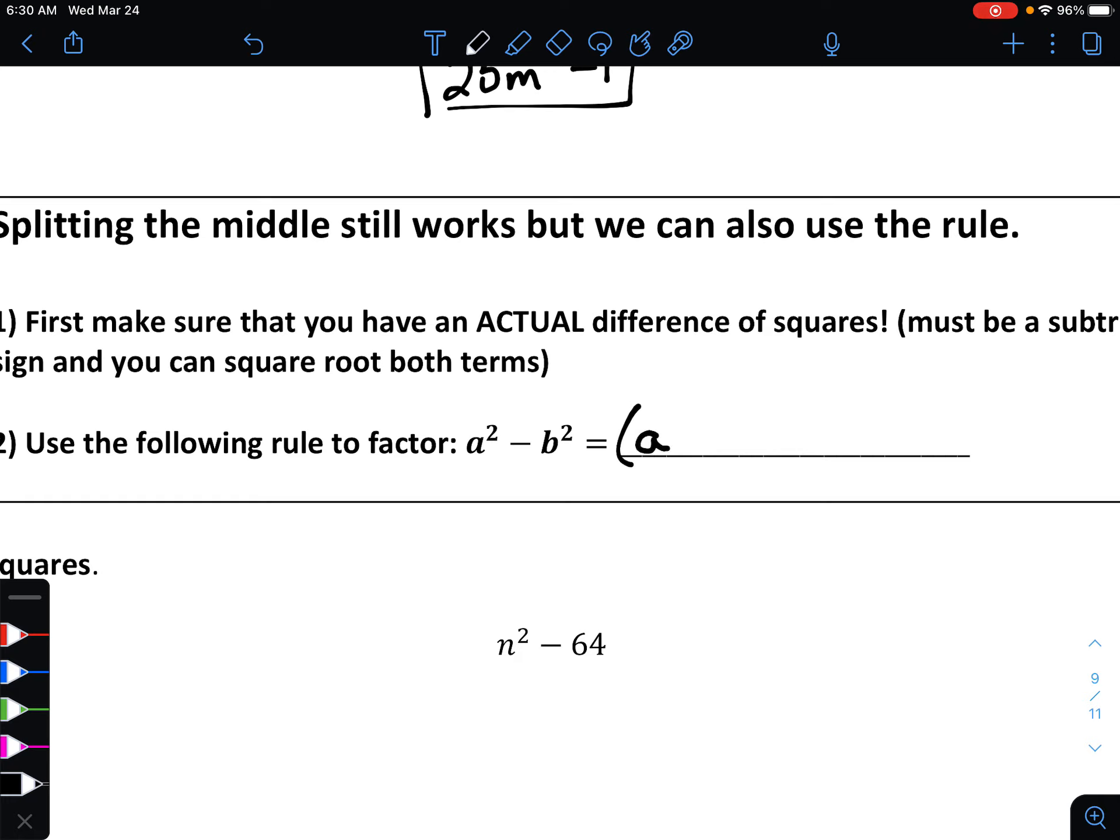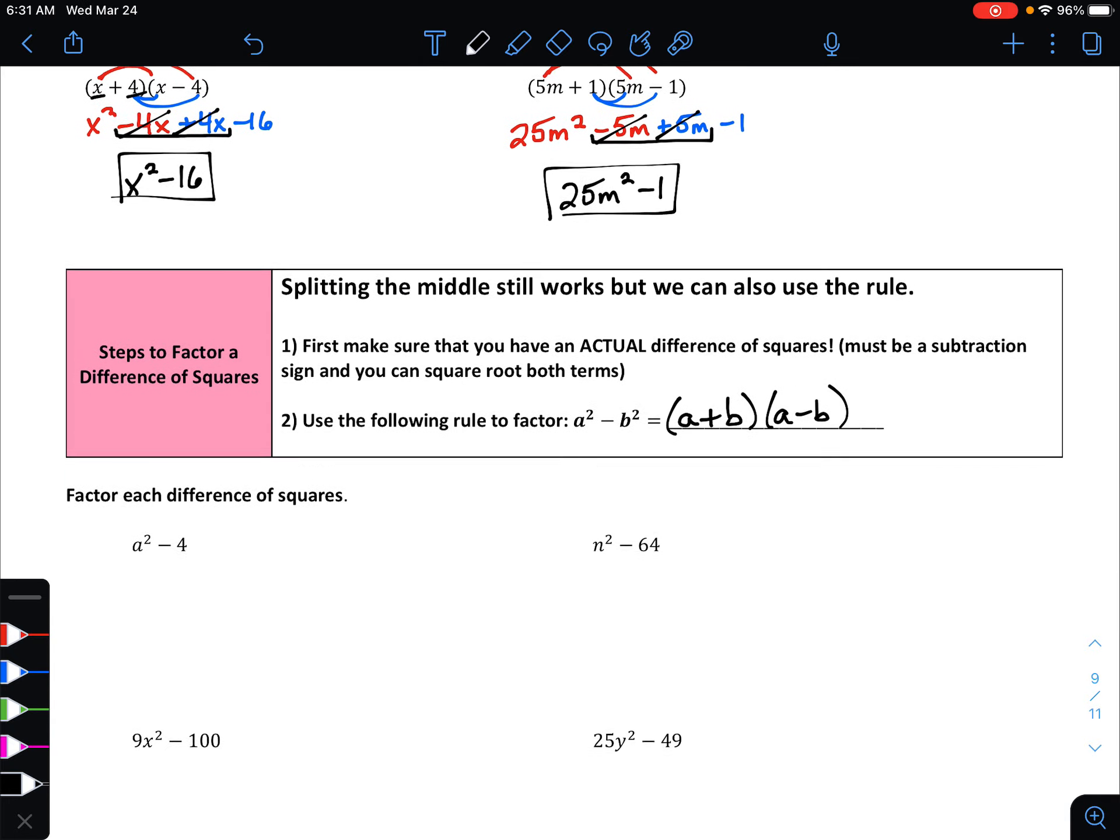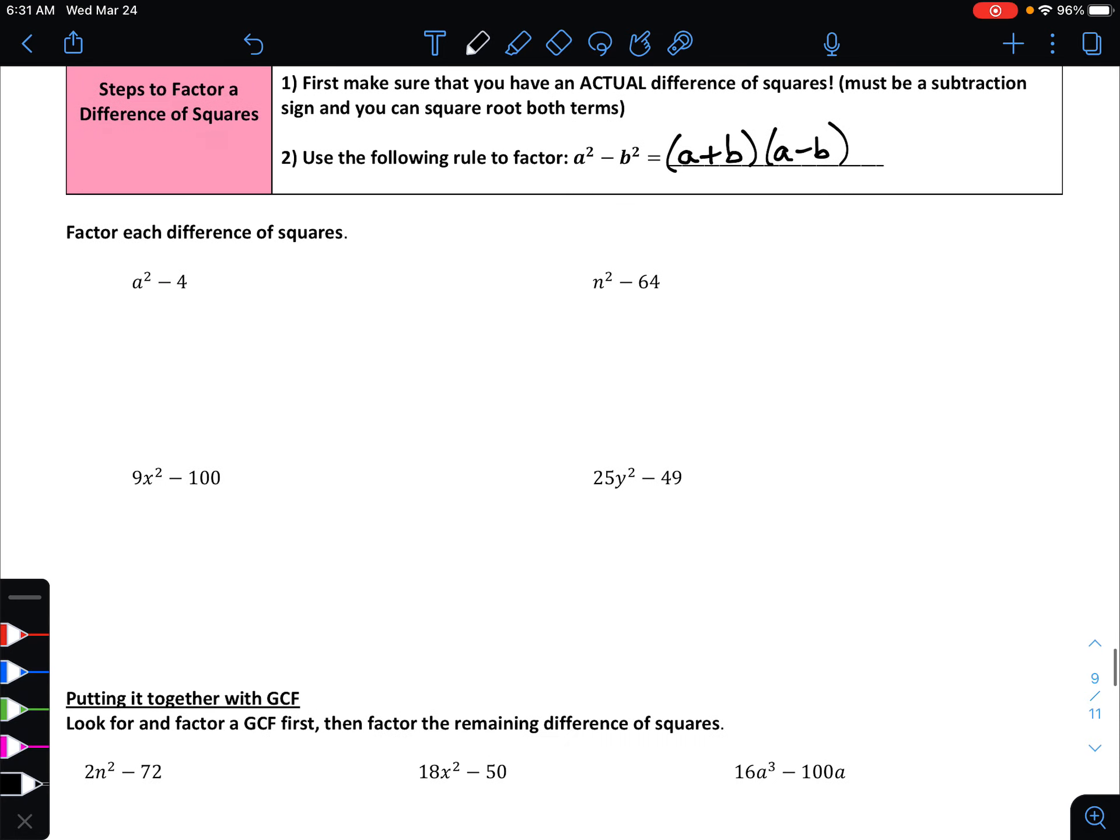But we can also use this rule to help us factor a difference of squares. And the rule is this. If you want to factor a squared minus b squared, then that becomes (a + b)(a - b).